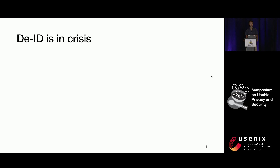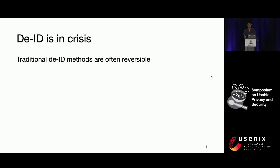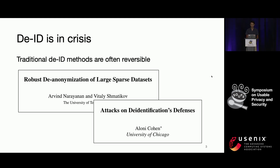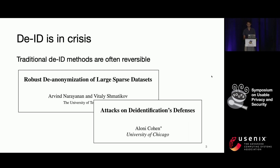Unfortunately, de-identification is in a bit of crisis right now. Traditional methods are often reversible. Previous work has shown that individuals can sometimes be pretty straightforwardly re-identified using just a small number of data points, none of which is uniquely identifying on its own. More recent work has shown that if certain assumptions hold true about how a dataset was de-identified, then it can be vulnerable to re-identification even if it meets a common metric of success known as k-anonymity.